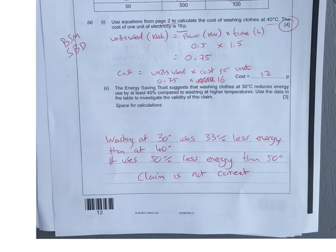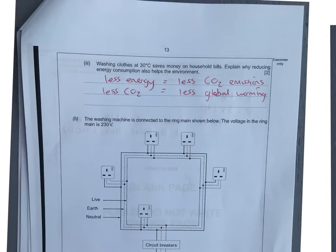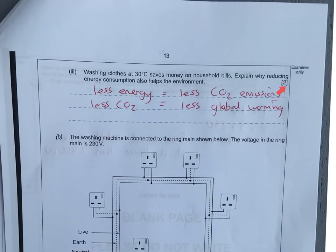Same part of the question then. These questions come up all the time. Whilst you close to 30, you're going to save money on bills. How is it good for the environment? Well, less energy equals less CO2 emissions, so less work done by the power station, therefore less CO2 emissions equals less contribution towards global warming.